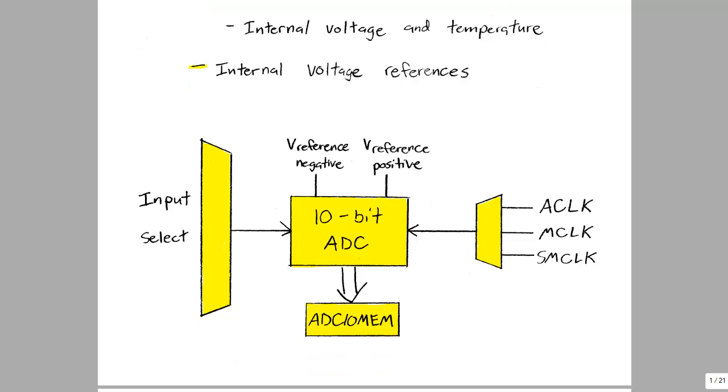This block diagram shows an overview of what's going on inside the ADC10 module. For a complete block diagram, refer to the MSP430 user's guide. On the left-hand side, we have the inputs. These can be any one of the eight inputs, either external or internal from voltage or temperature.